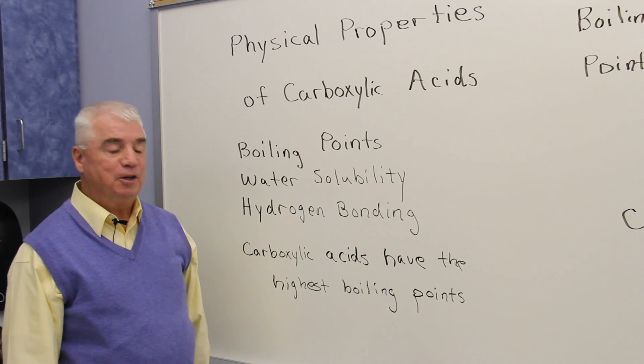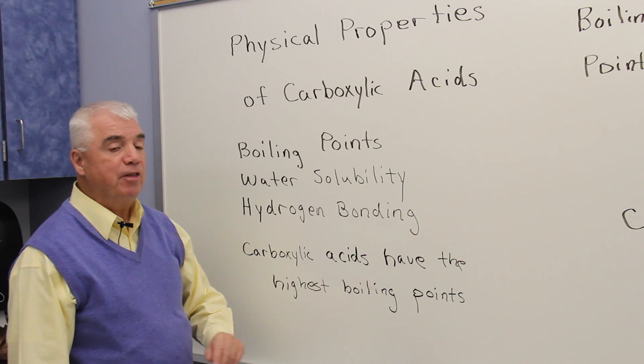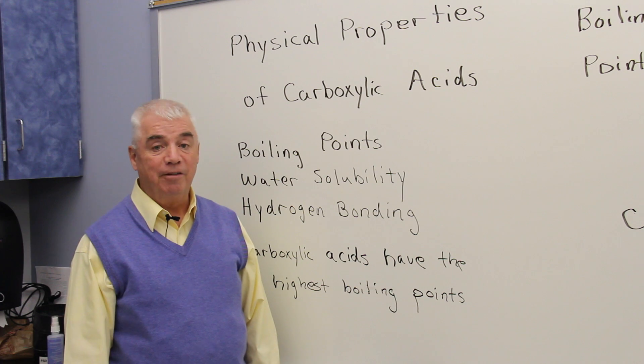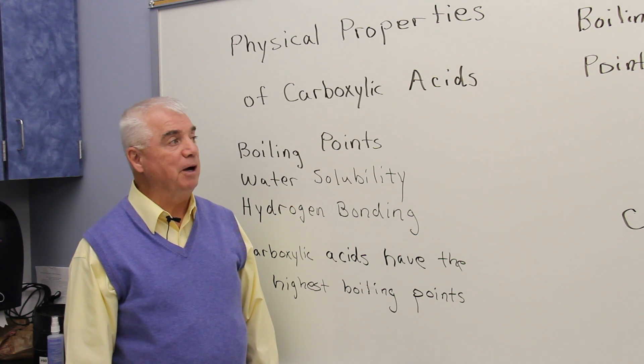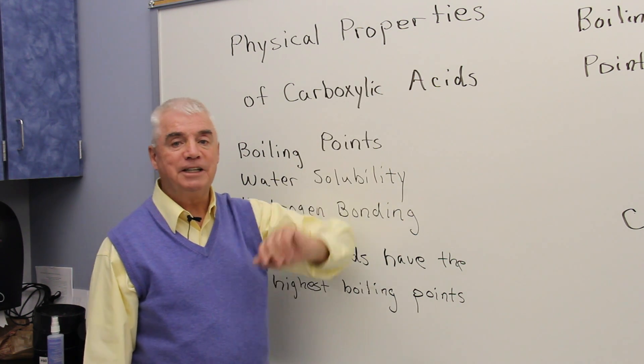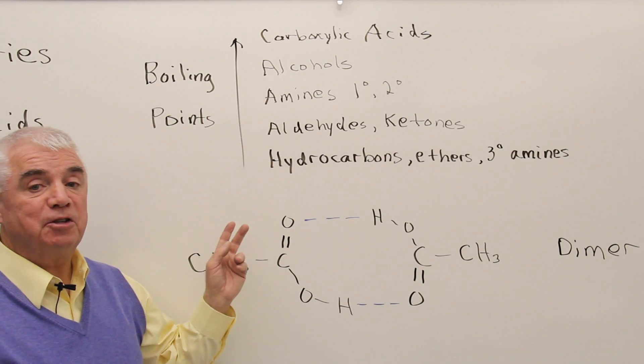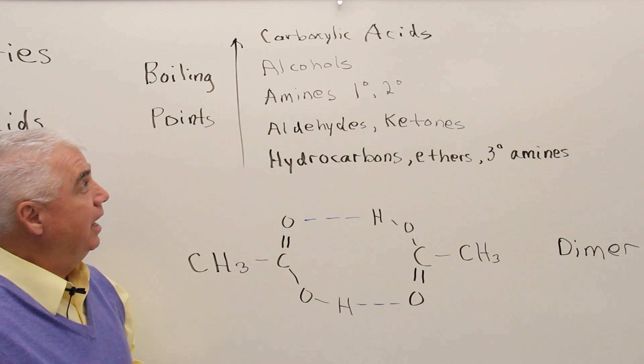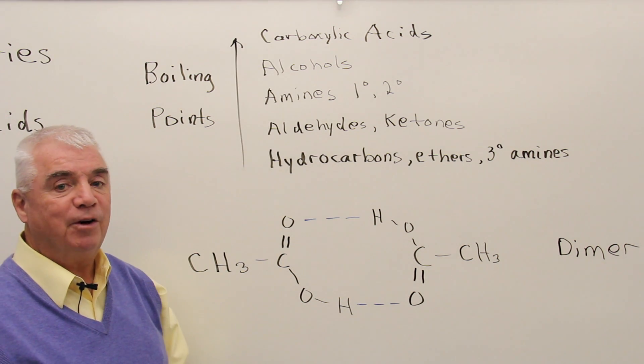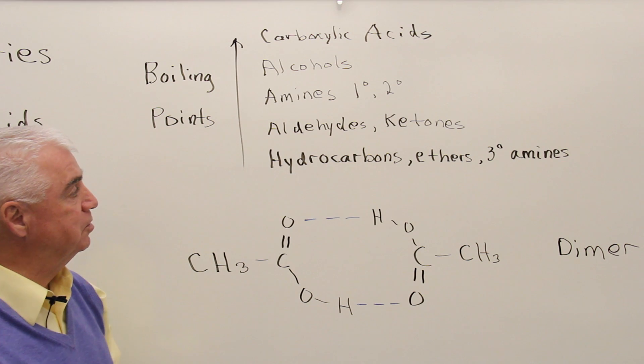Carboxylic acids, it turns out, have the highest boiling points of any of the families that we've talked about so far. Let's look at a table. We'll see in a minute that carboxylic acids are terrific at hydrogen bonding, and that puts them at the top of the list as far as boiling points.